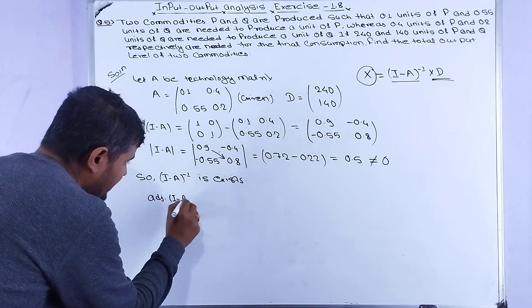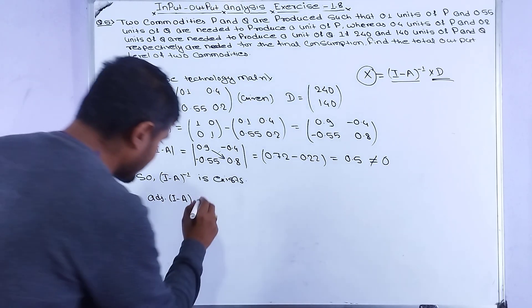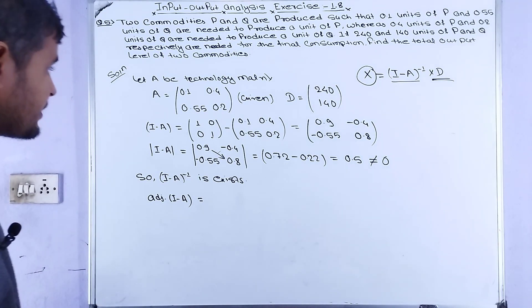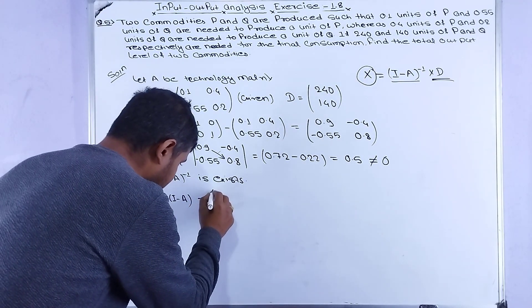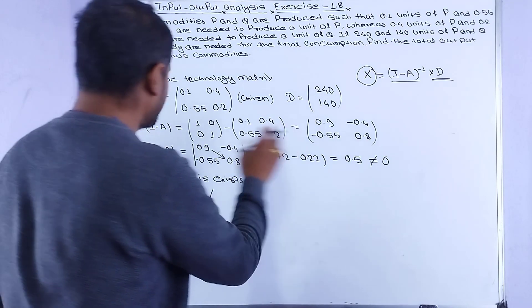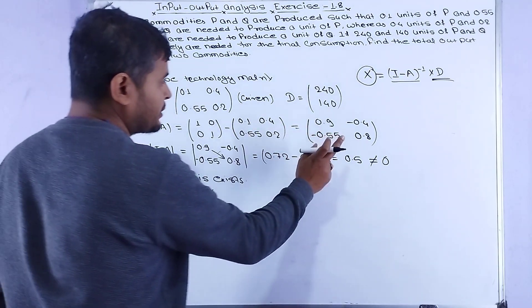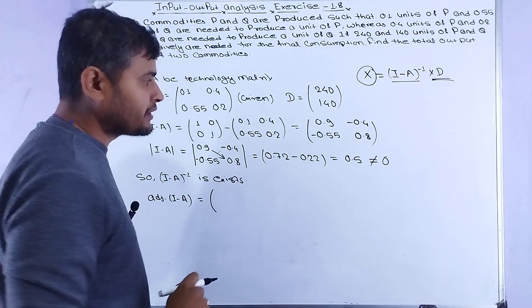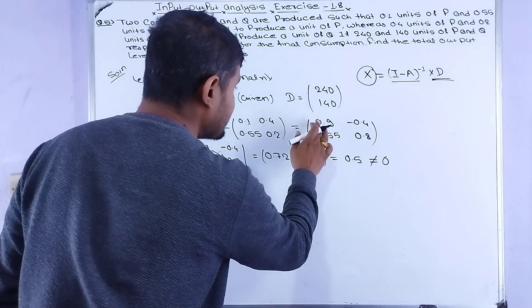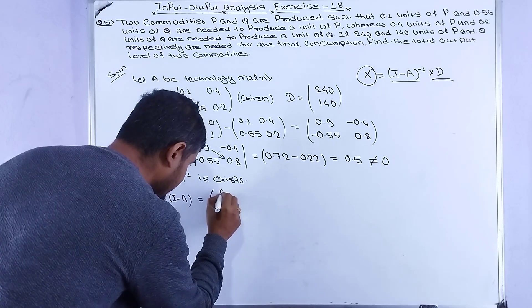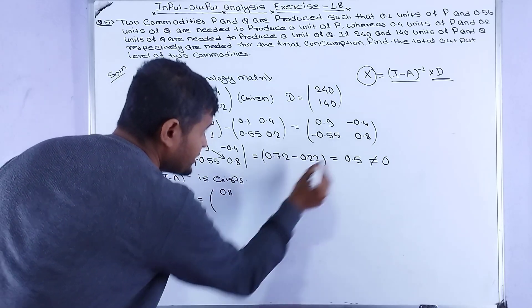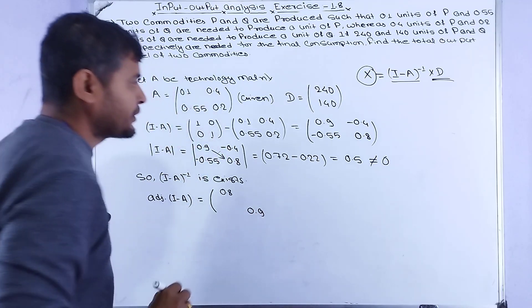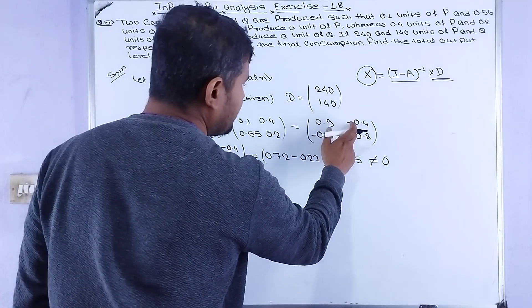Now we calculate the adjoint of the matrix (I - A). The adjoint matrix is formed by interchanging the diagonal elements and changing the signs of off-diagonal elements: [0.8, 0.4; 0.55, 0.9].